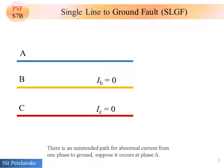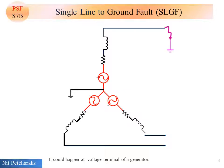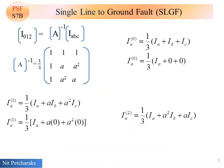There is an unintended path for abnormal current from one phase to ground. Suppose it occurs at phase A. It could happen at voltage terminal of a generator. Suppose there is no load in this case. Therefore current in phase B and C are zeros.